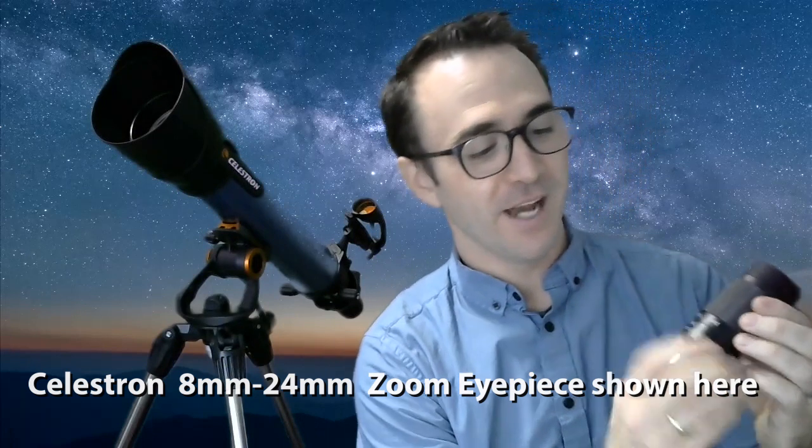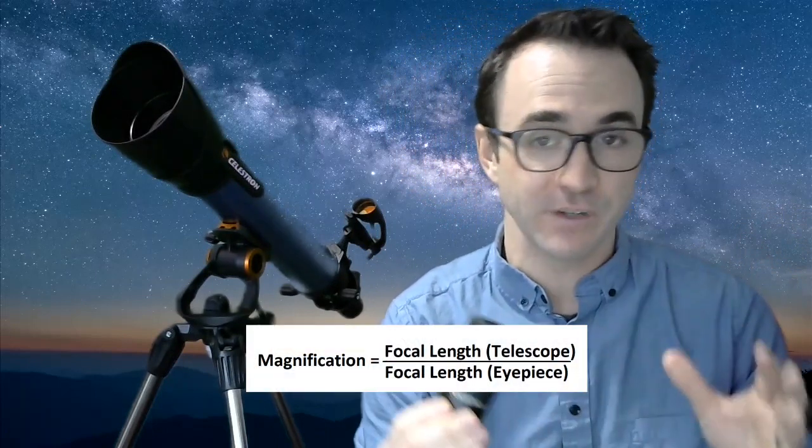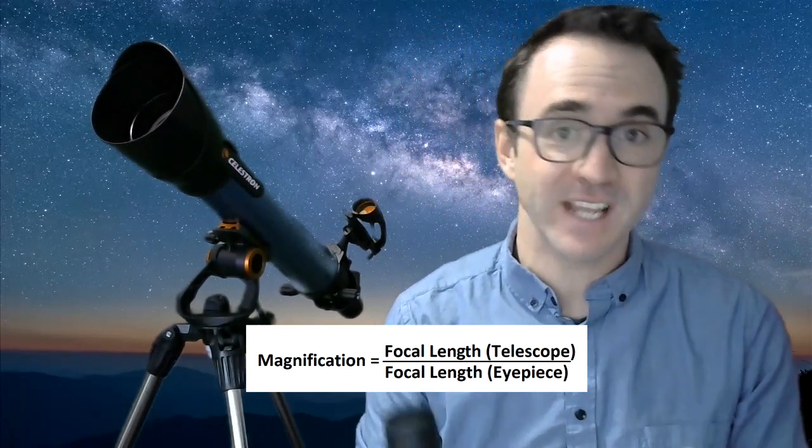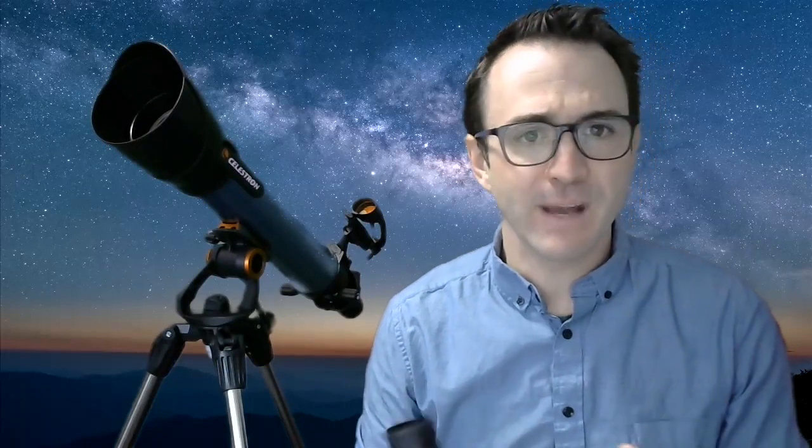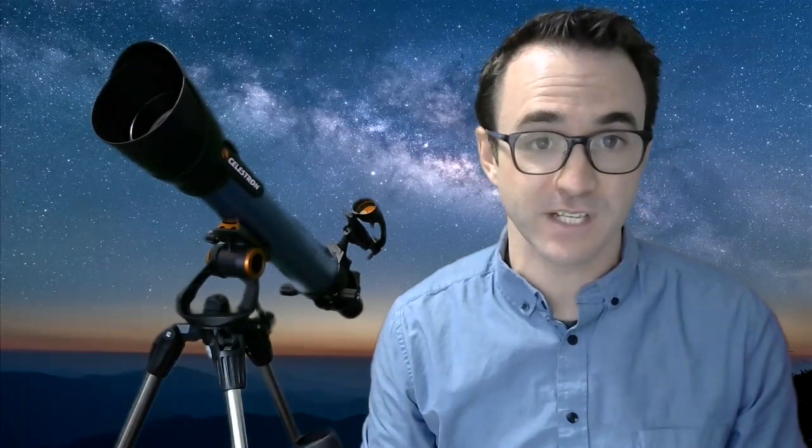Now the zoom on the eyepiece typically ranges from 24 millimeters all the way down to 8 millimeters. To calculate magnification, you just divide this number by the focal length of your telescope. For example, if your telescope has a focal length of 800 millimeters and you use an 8-millimeter eyepiece, or the 8-millimeter setting, then your magnification is 100 times. Remember that with telescopes, less magnification is better for finding targets and observing most objects.